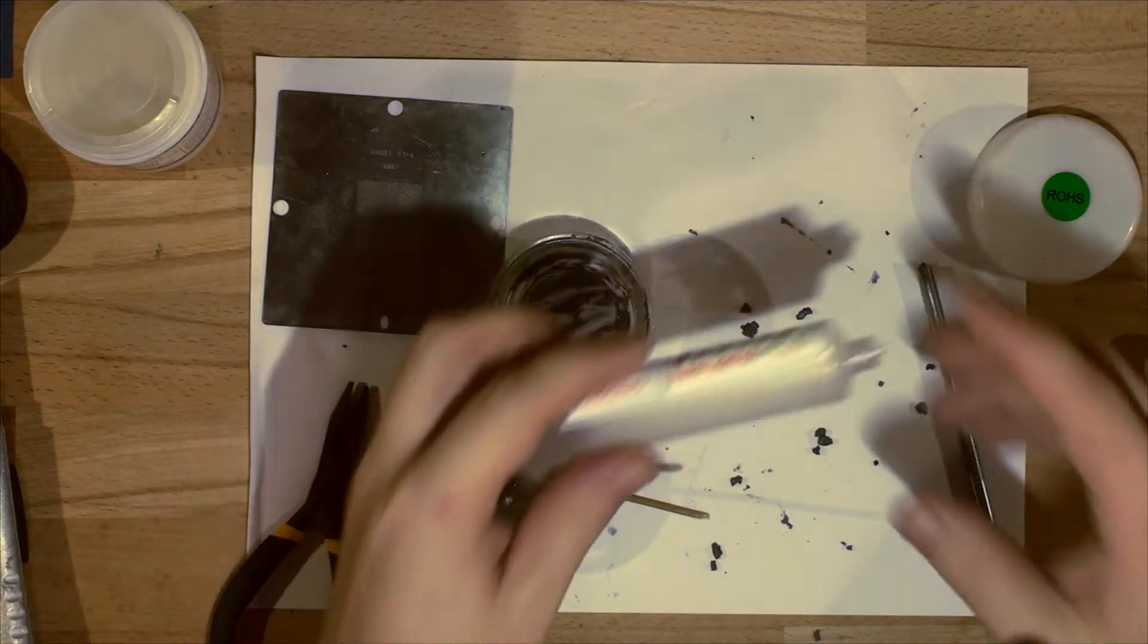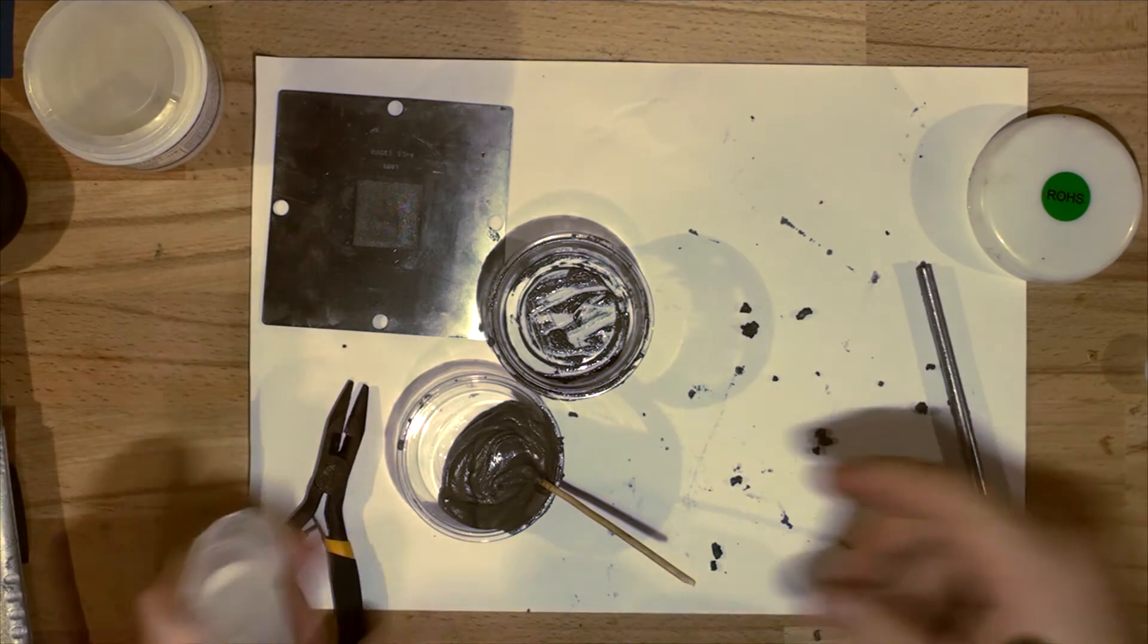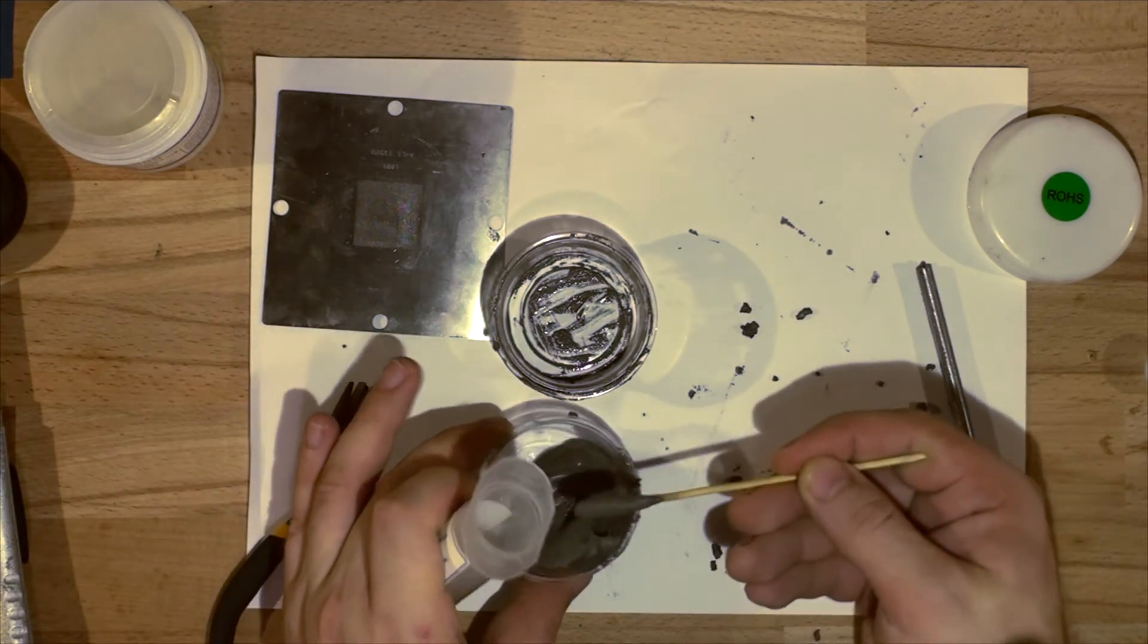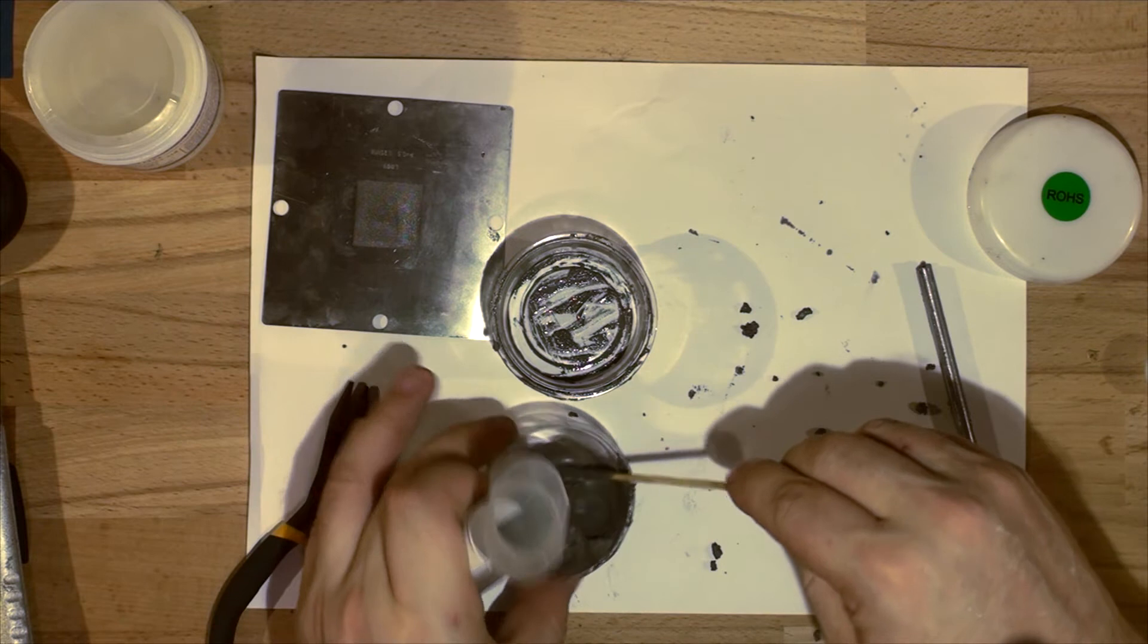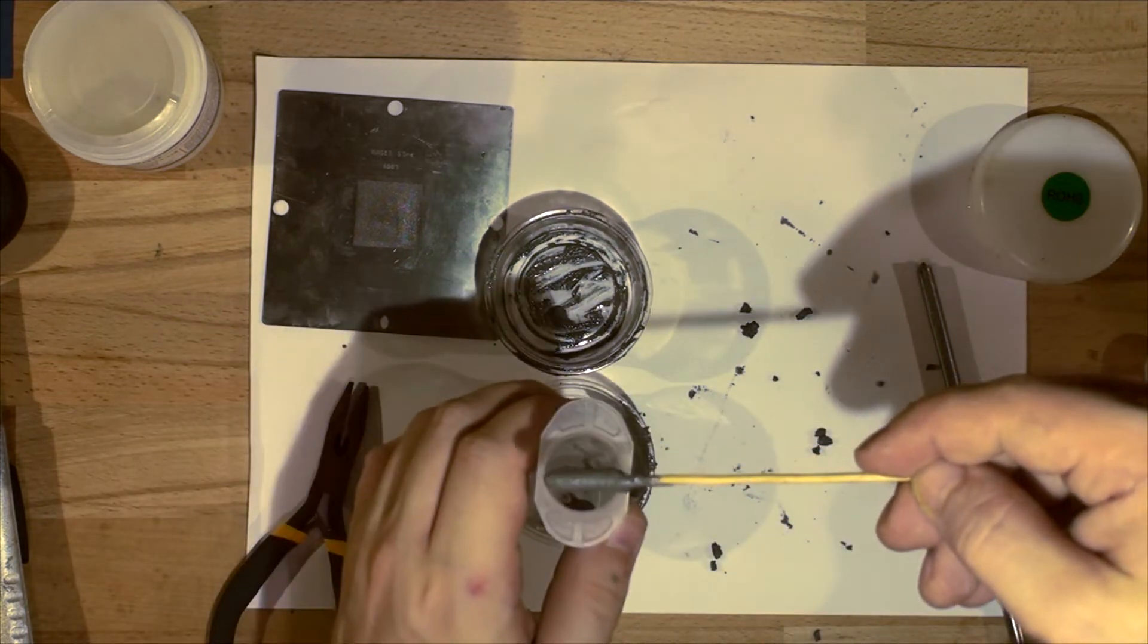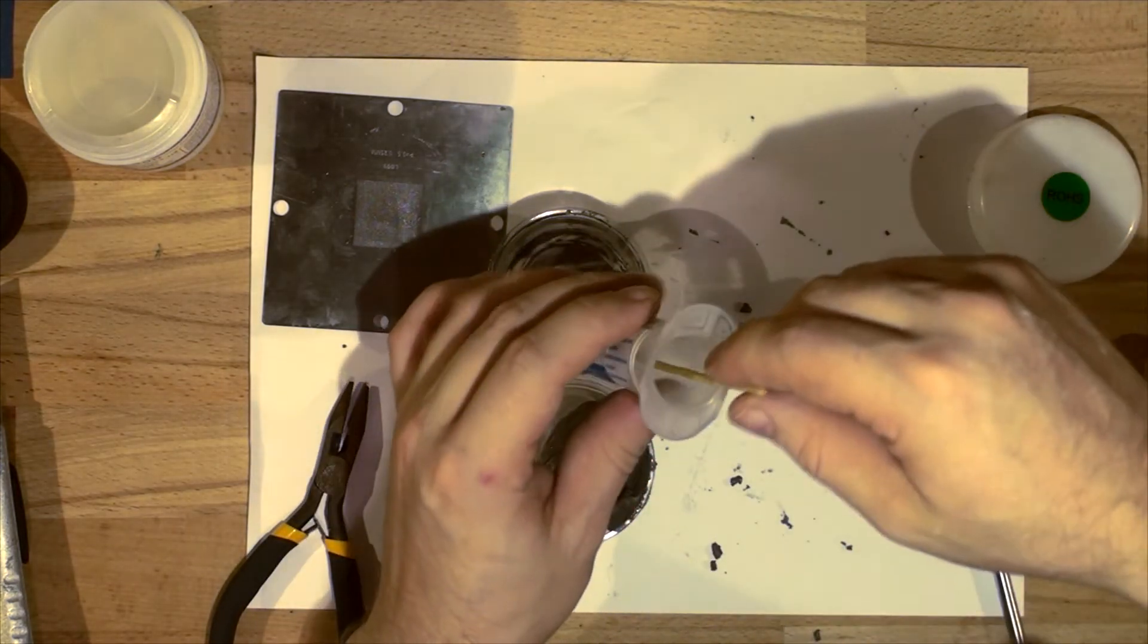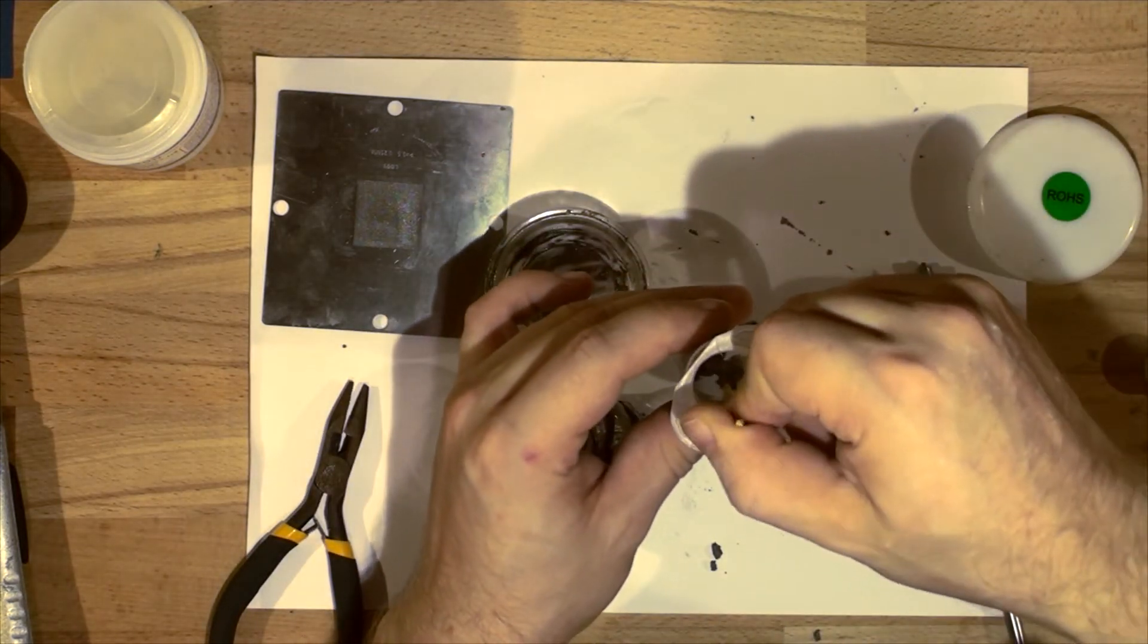The syringe is now nice and clean, so I'm going to replace the end of it. Now I'm going to get all this paste back into the syringe. Usually I just get quite a bit of it on the stick, get it into the syringe, push it all the way down, and then push it against the wall and twist the stick.